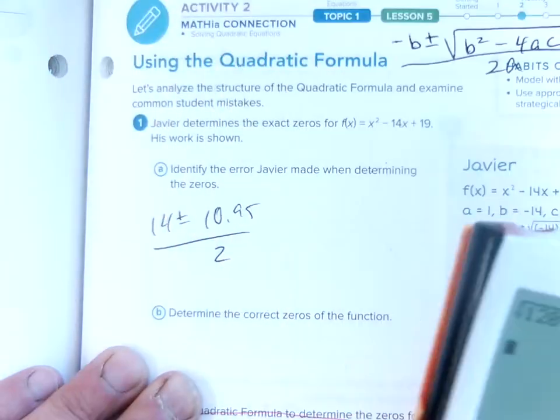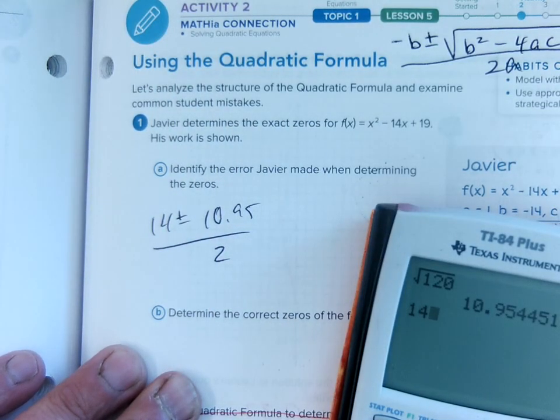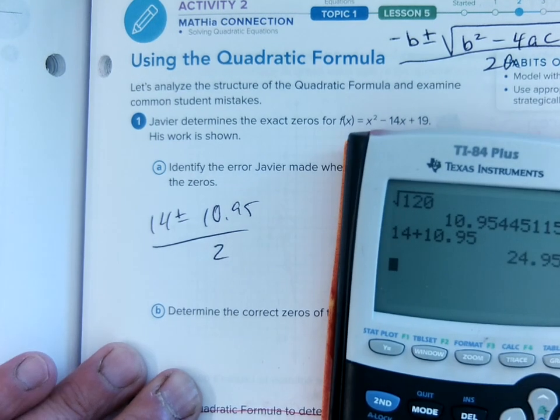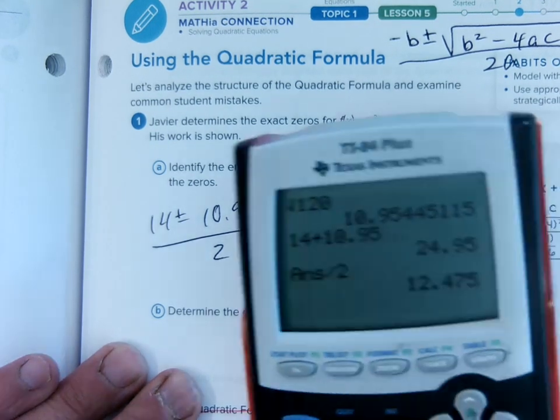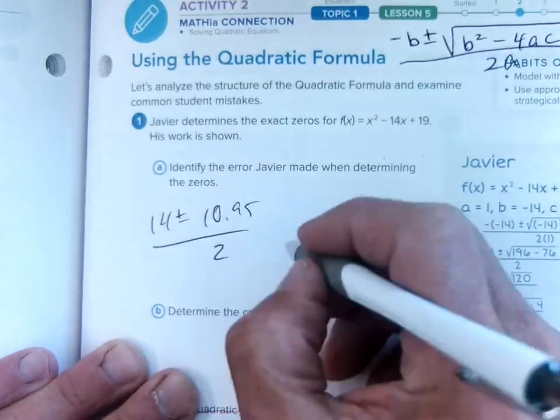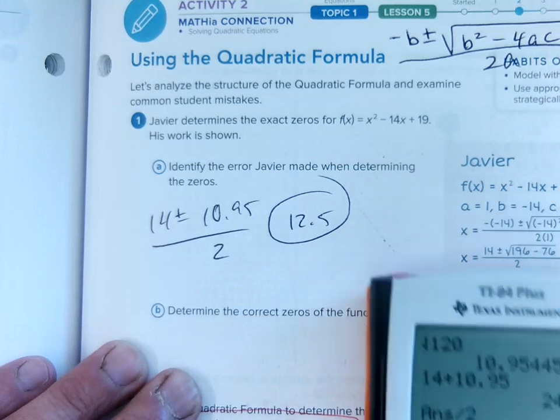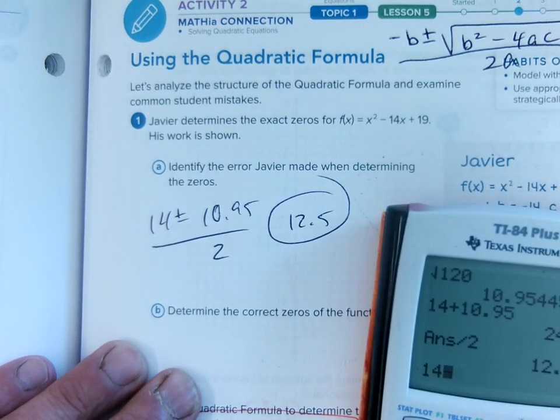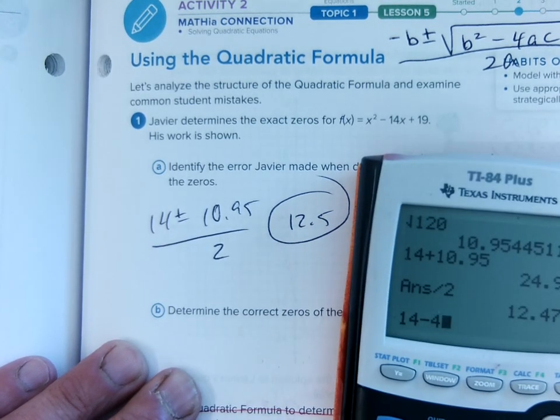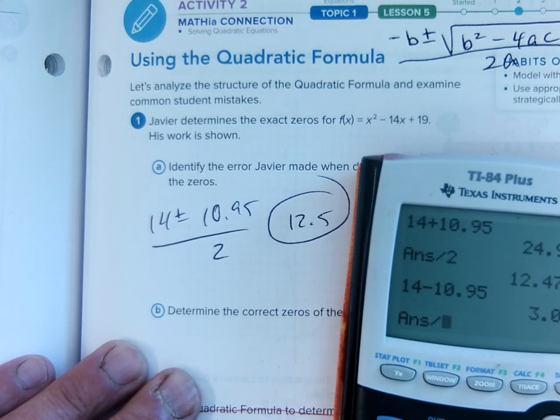And then I'm going to get my answers. I'm going to go 14 plus 10.95 and divide that by 2, and one answer is 12.5, we'll round it. And then the other, if we want our 14 subtract 10.95 and then divide that by 2, we're going to answer about 1.5.